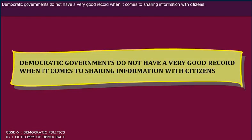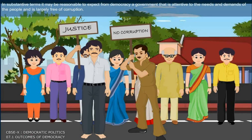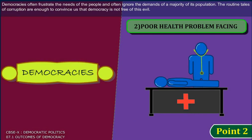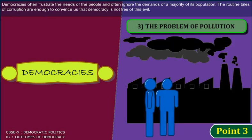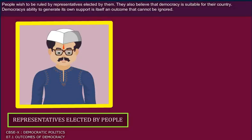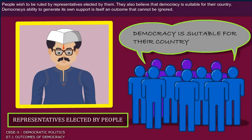Democratic governments do not have a very good record when it comes to sharing information with citizens. In substantive terms, it may be reasonable to expect from democracy a government that is attentive to the needs and demands of the people and is largely free of corruption. Democracies often frustrate the needs of the people and often ignore the demands of a majority of its population. The routine tales of corruption are enough to conceive that democracy is not free of this evil. At the same time, there is nothing to show that non-democracies are less corrupt or more sensitive to the people.